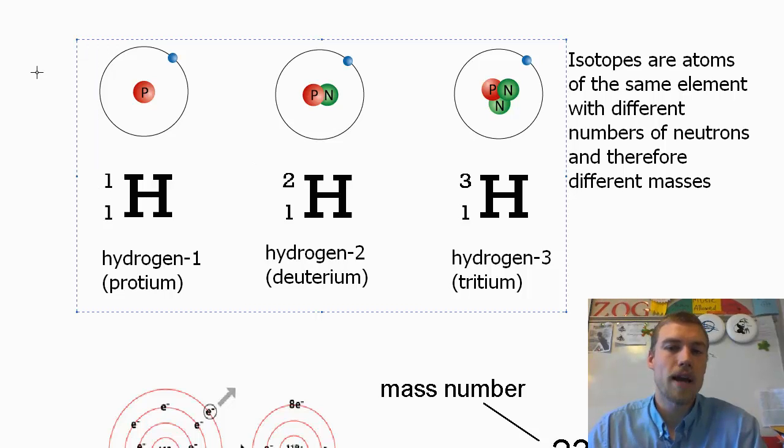Now if we recall back to what we've learned before, atoms are made up of three basic elements. You've got protons, neutrons, and electrons. Now our protons and our neutrons both have a mass of 1, and electrons have a mass of 0.